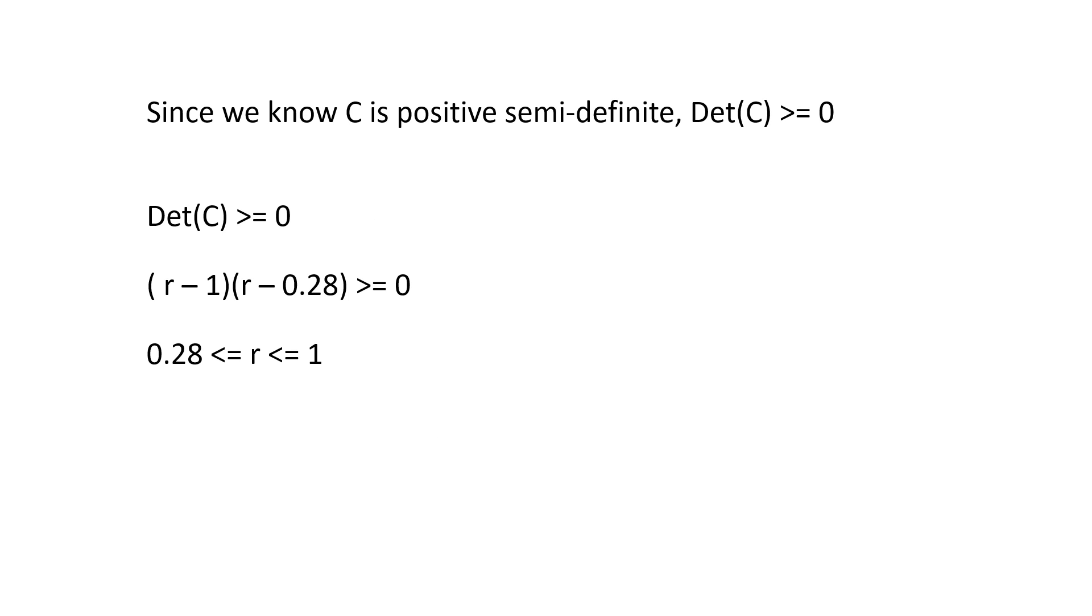Solving for the determinant of the matrix C we get r minus 1 times r minus 0.28. This is greater than or equal to 0 and this gives us the range of the correlation r between 0.28 and 1.